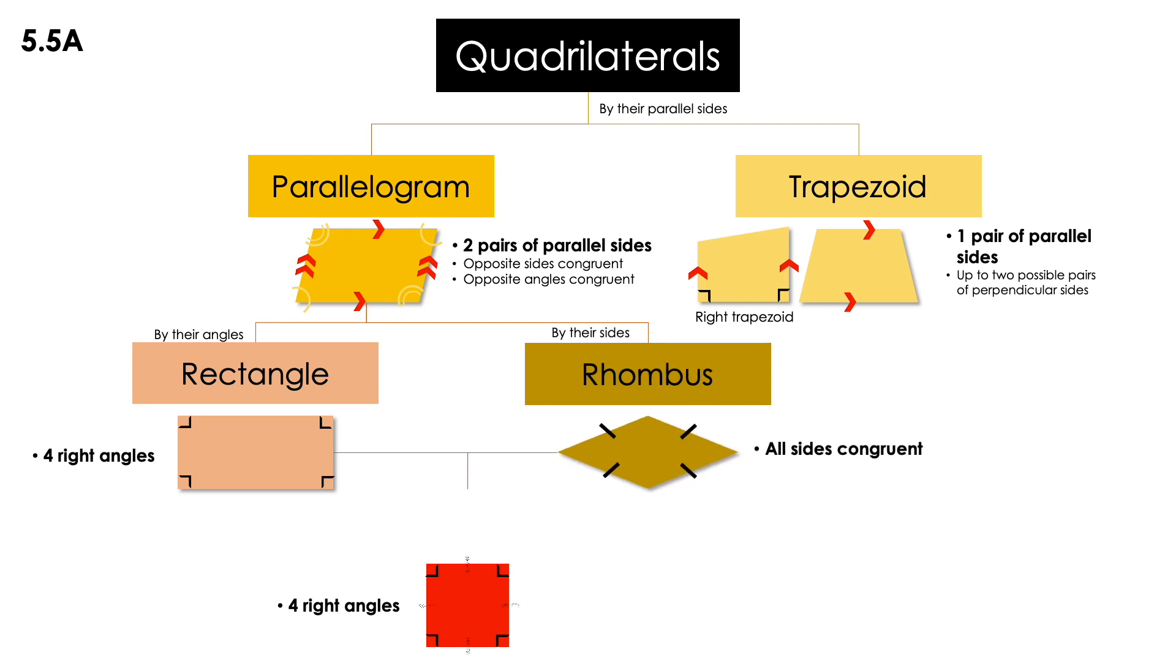And also, it has, as the rhombus, all sides congruent. This shape we're going to call a square.